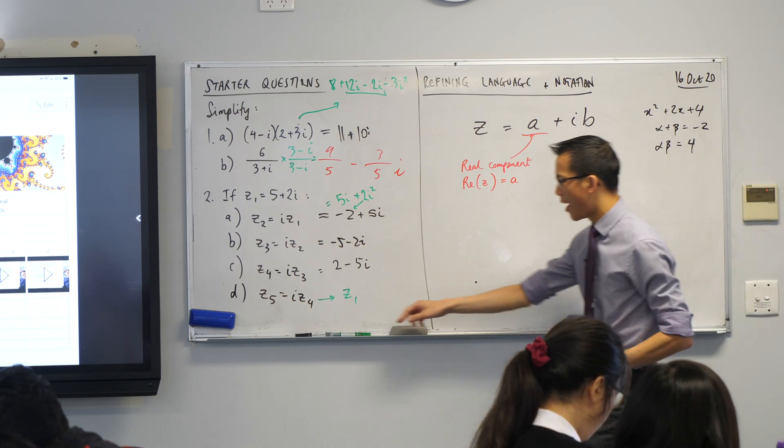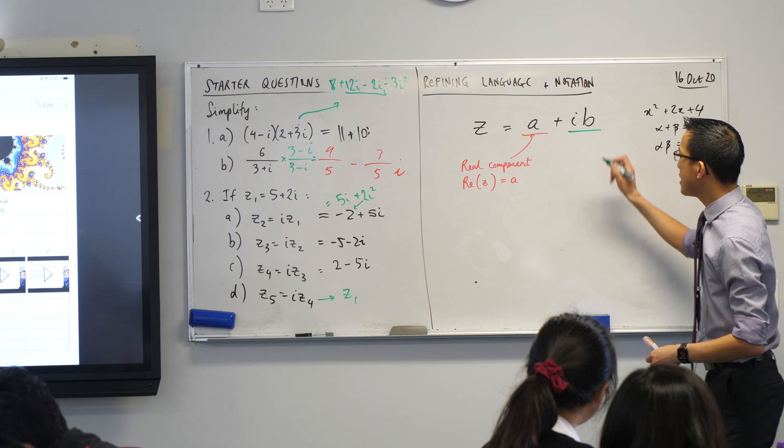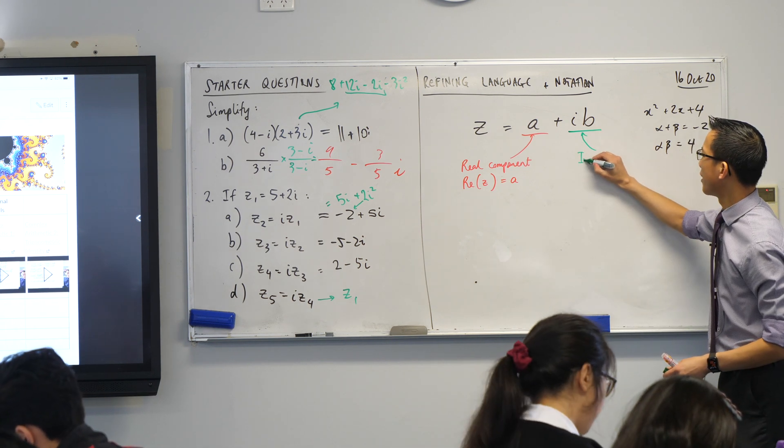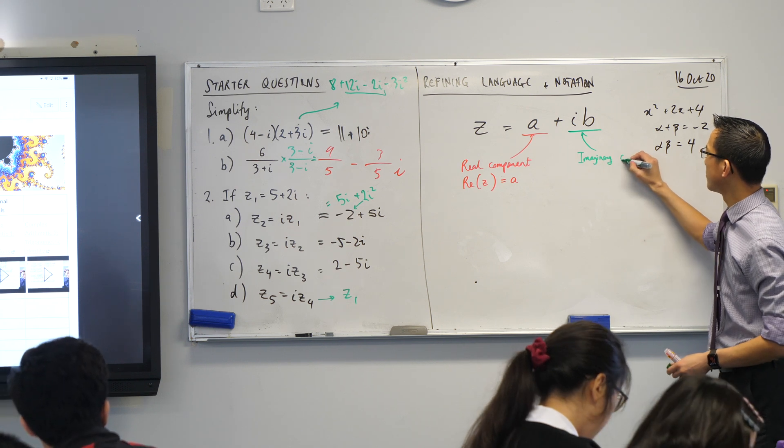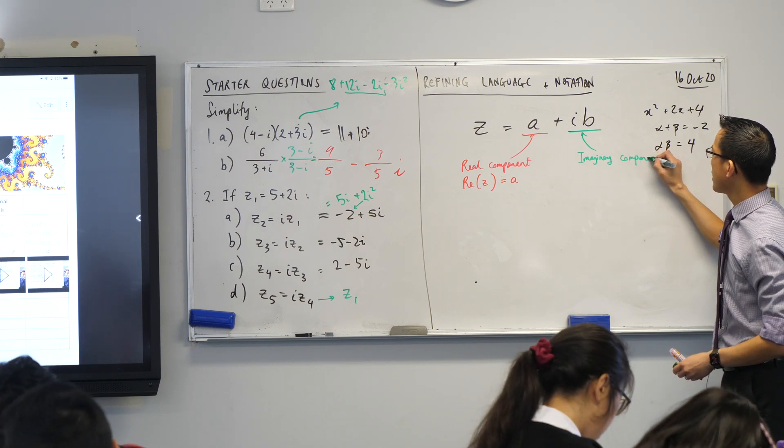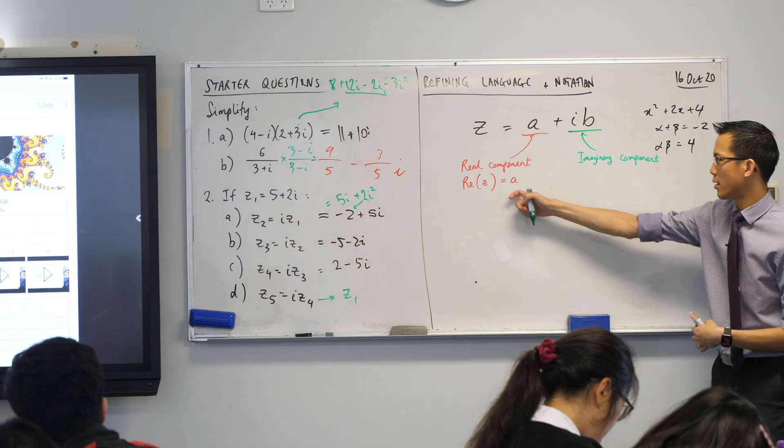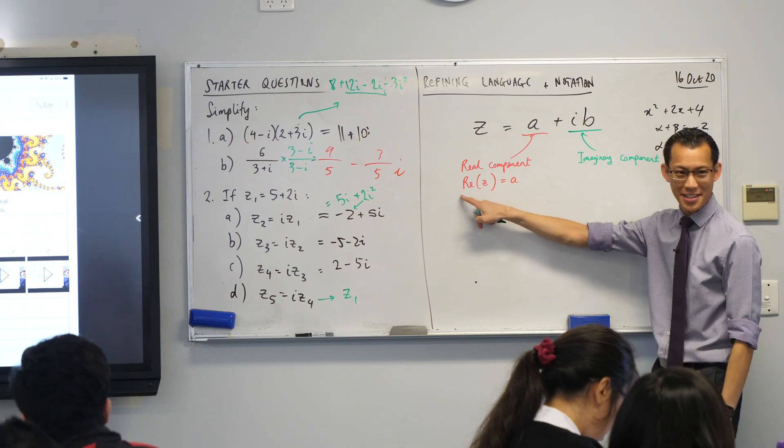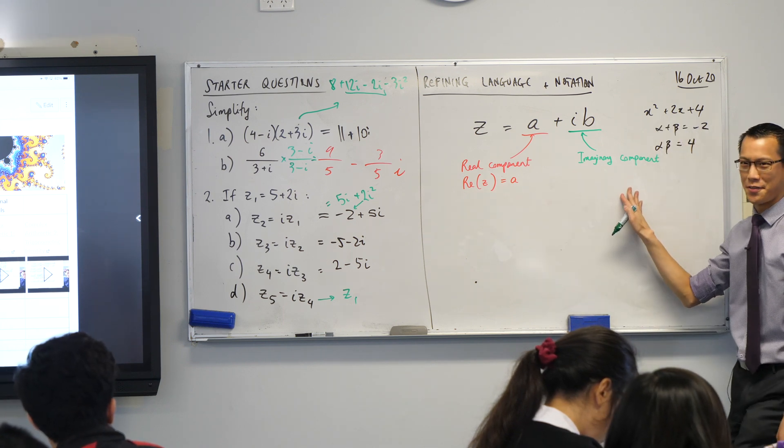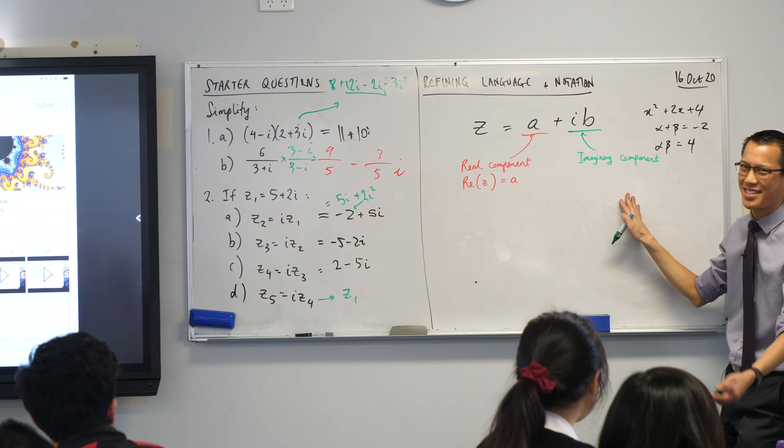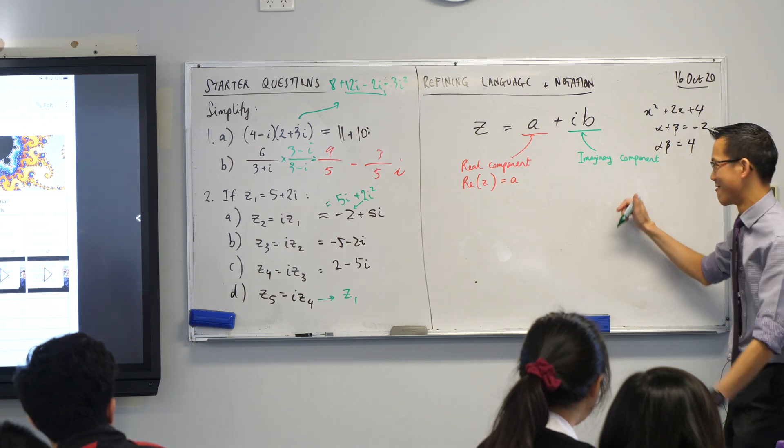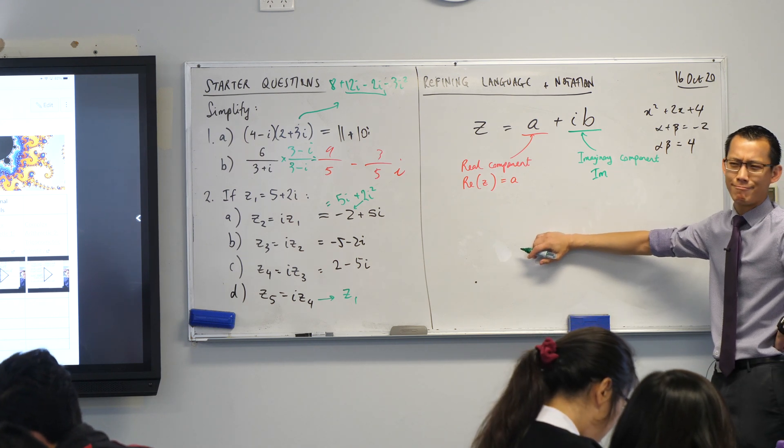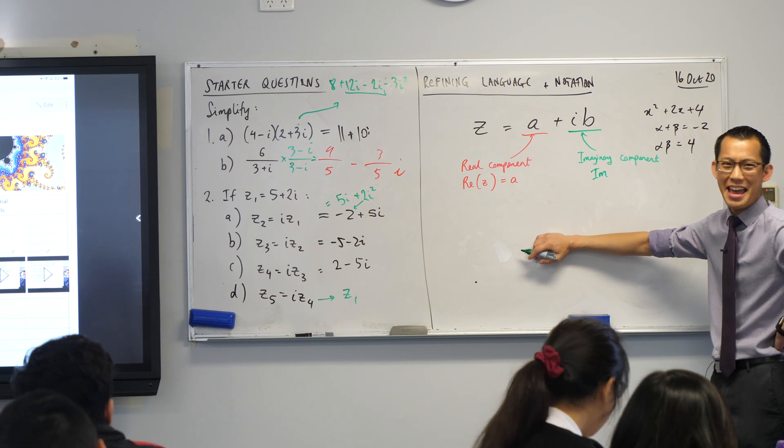Now when we talk about the other part, there's a slight difference here. This, including the i, this is our imaginary component. But when we think about the sort of converse of this guy, what, by the way, what notation do you think we would use if this is how we refer to the real component? How do you think we refer to the imaginary component? Just take a stab in the dark. I am, right? Sometimes, sometimes we use completely random things like, what's our parameter for gradient? I know, m, right? Sometimes it's like, why is that? This time, at least, it's reasonably sensible.